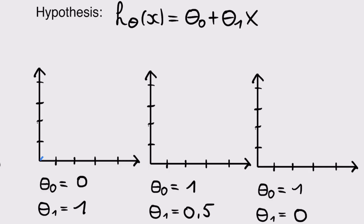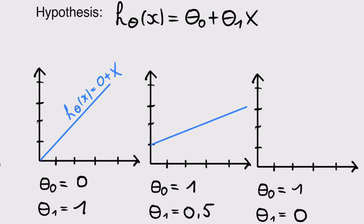First, let's recap what happens to our hypothesis if we change the parameters theta 0 and theta 1. In the first example, we set theta 0 equal to 0 and theta 1 equal to 1, which results in a certain hypothesis. In the second example, theta 0 is 1 and theta 1 is 0.5. And lastly, we show an example where theta 0 is 1 and theta 1 is 0.